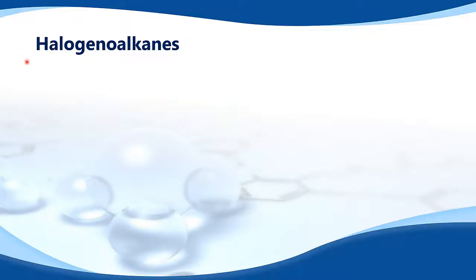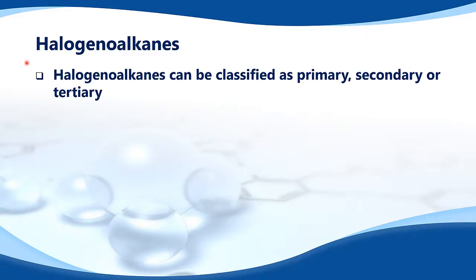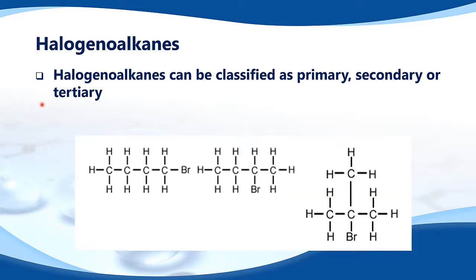Let's take a look at the halogenoalkanes. Halogenoalkanes can be classified as primary, secondary, or tertiary. Here's an example. We have the halogen, which is bromine, attached to this carbon. This carbon is attached to one other carbon and two hydrogen atoms, which makes it a primary halogenoalkane.